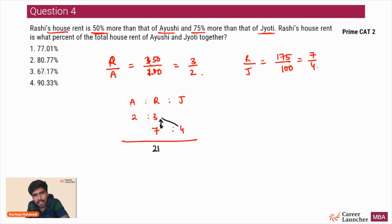Ayushi is to Rashi is 2 is to 3 because Rashi upon Ayushi was 3 is to 2, and Rashi upon Jyoti is 7 is to 4. If we have to find a combined ratio, what to do? Multiply these two, you will get the value of Rashi - 3 into 7 is 21. Multiply these two, you will get the value of Jyoti - 3 into 4 is 12. And multiply these two, you will get the value of Ayushi - 2 into 7 is 14. So the combined ratio becomes 14 is to 21 is to 12. What is the question asking? Rashi's house rent is what percent of the total house rent of Ayushi and Jyoti together? Rashi's house rent is 21. Total house rent of these two is 14 plus 12, which is 26. 21 upon 26 into 100 is what percentage? I'll approximate this roughly to be just about 80% and I'll mark the answer to be option 2.